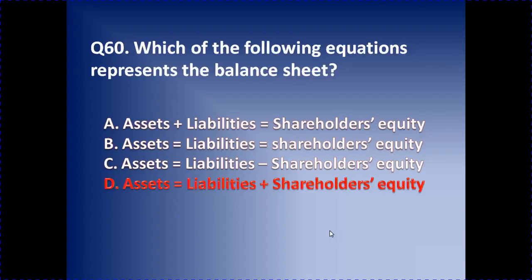The last question: which of the following equations represents the balance sheet? Option one — assets plus liabilities equals shareholders' equity — is not the right answer. Option two — assets equals liabilities and shareholders' equity. Option three — assets equals shareholders' equity alone. Assets equals liabilities plus shareholders' equity is the correct balance sheet equation.